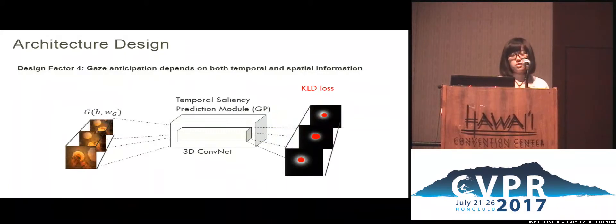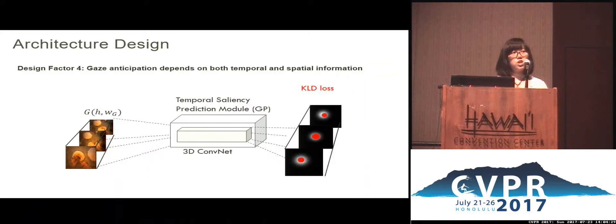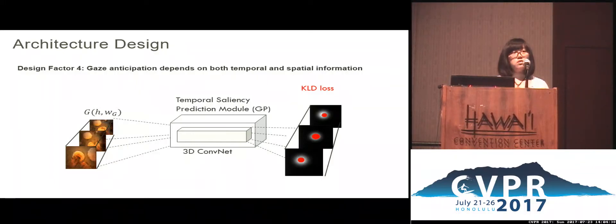The last factor suggests that the temporal dependency of gaze states also plays an important role in gaze anticipation. In other words, the current gaze location depends on the previous gaze location. Thus, we propose a 3D neural network for temporal saliency prediction. The red dots are the highest activation points on the temporal saliency maps, and thus they are the most probable anticipated gaze locations.